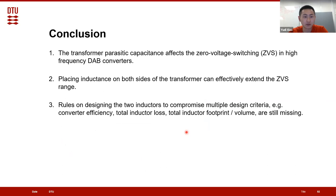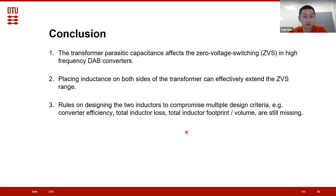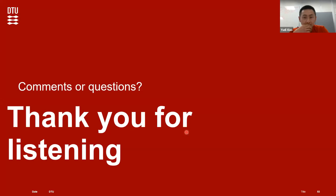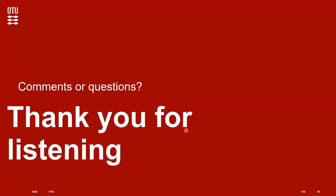Three conclusions: first, transformer parasitic capacitance affects zero voltage switching in high frequency DAB converters. Second, placing inductance on both sides of the transformer can effectively extend the zero voltage switching range. Third, there are missing rules for designing the two inductors to compromise multiple design criteria — for example, the converter efficiency, which experiments show can decrease when splitting the inductance, as well as minimizing total inductor loss or total inductor footprint.